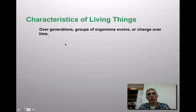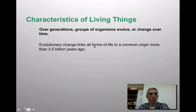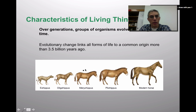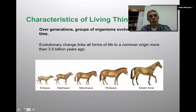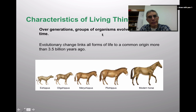The very last characteristic is evolution, which basically means to change. Over generations, groups of organisms evolve or change over a long period of time. Evolutionary change links all forms of life to a common origin, which is speculated to be about 3.5 billion years ago. Down here is an example of how the horse has changed over millions of years — the early representation looks very different from the modern horse. We use fossils and DNA evidence to help determine how things are related and where they came from. This probably isn't something you can directly observe in the class activity, but it is something to consider when characterizing something as alive or not.